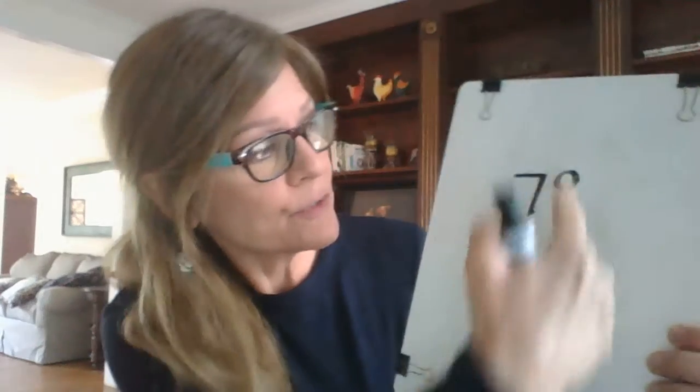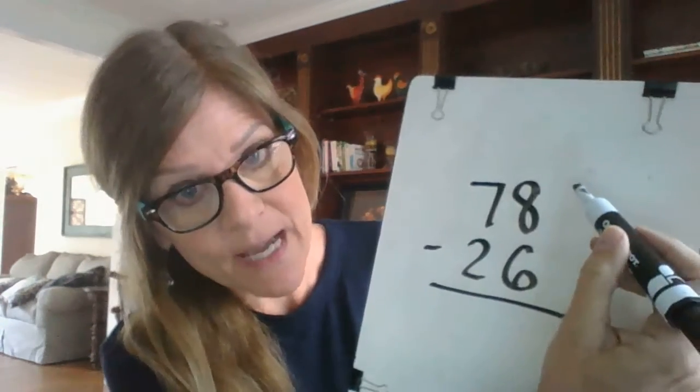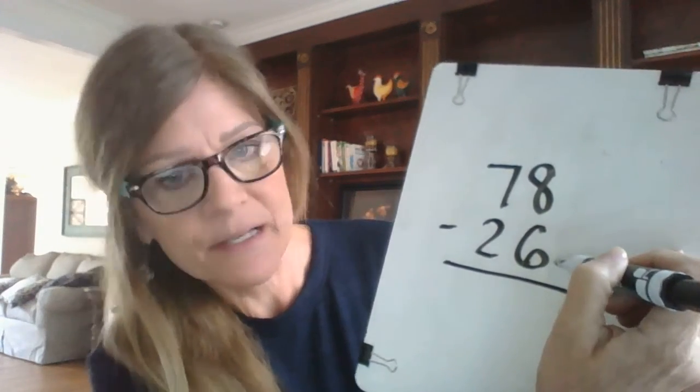This one's pretty easy. Again, we always start in the ones column. Always, always, always. And we always start at the top. So we're going to start here. 8 minus 6.